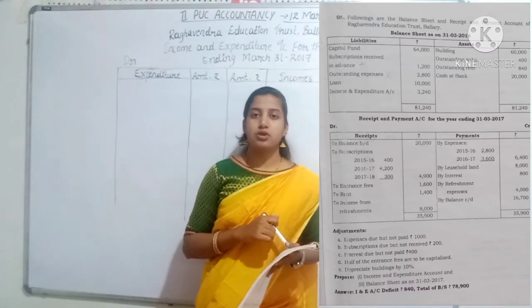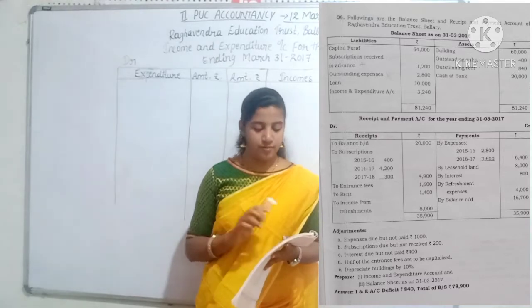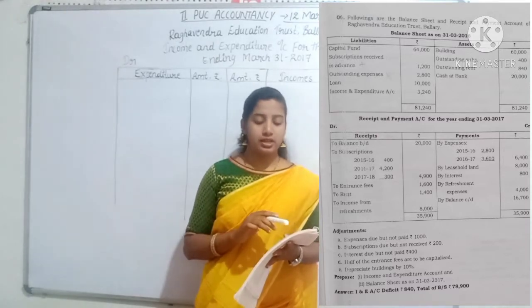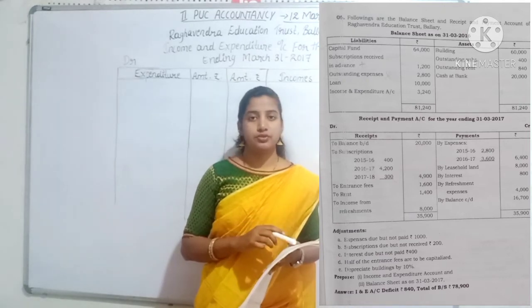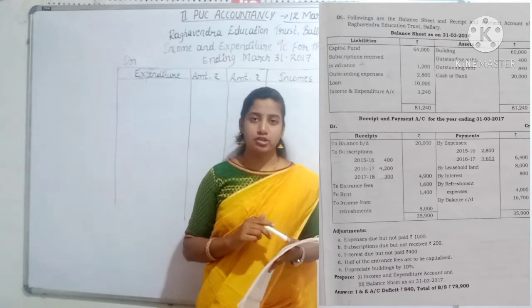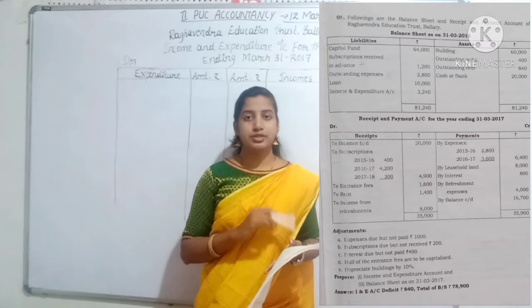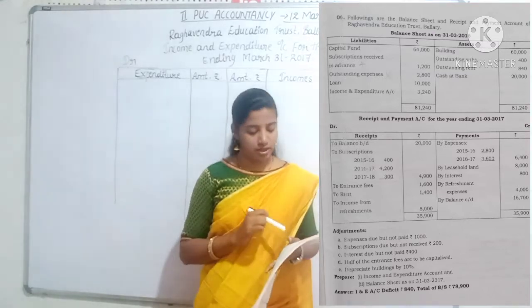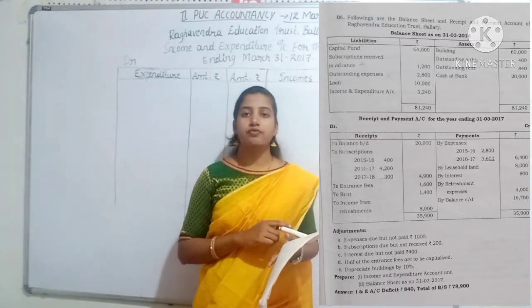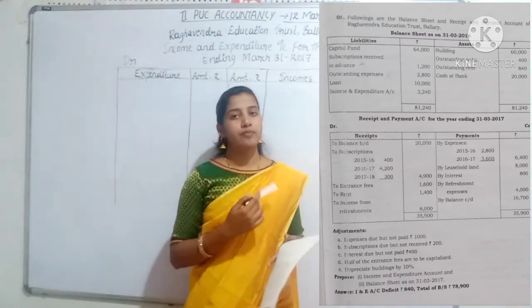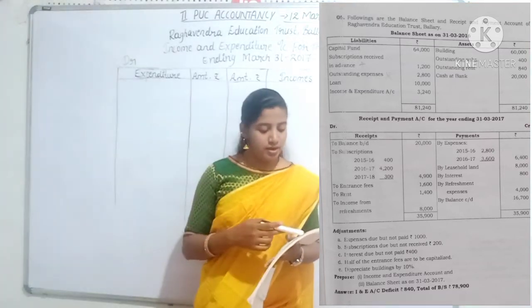Adjustment two: subscription due - outstanding current year subscription Rs. 200 is added. The advance received amount of Rs. 300 is a balance sheet liability side entry for the next year. Entrance fee: half of the entrance fee is capitalized, and the remaining amount goes to capital fund.